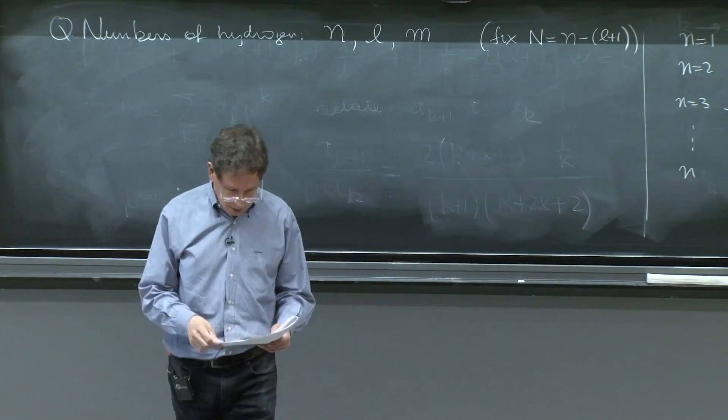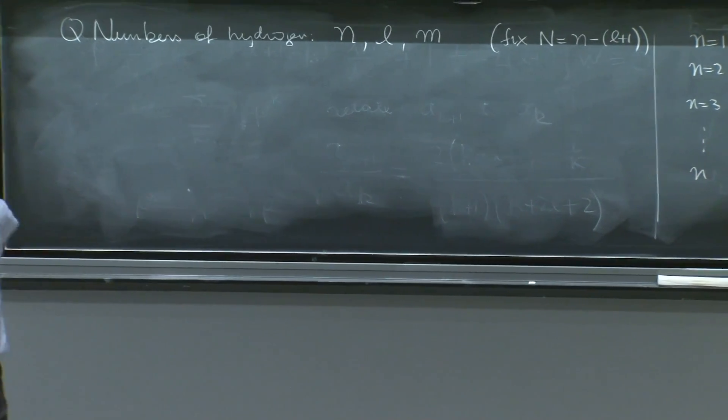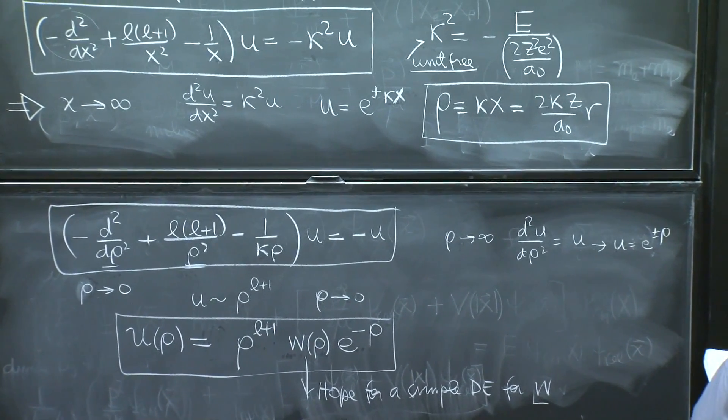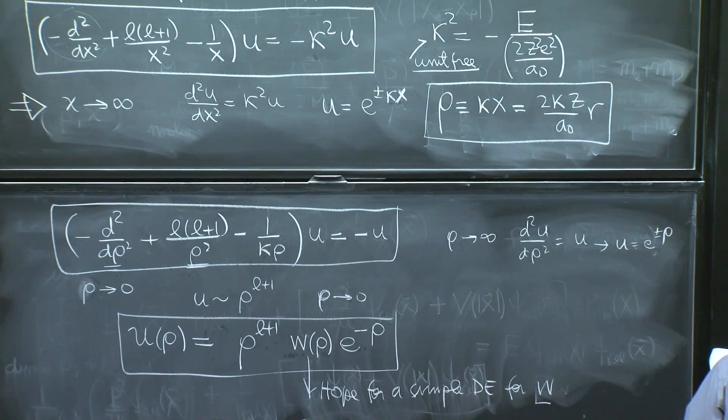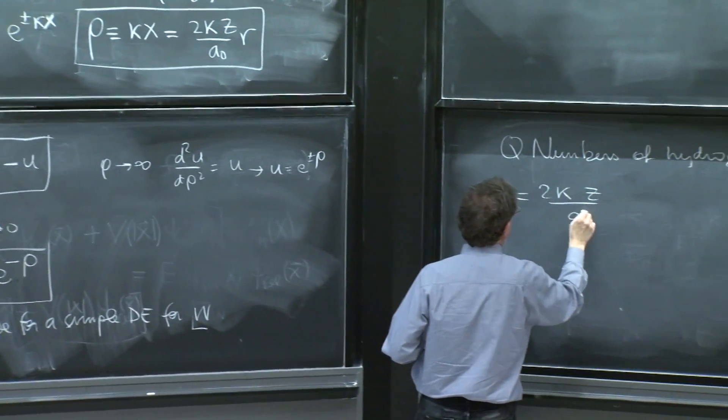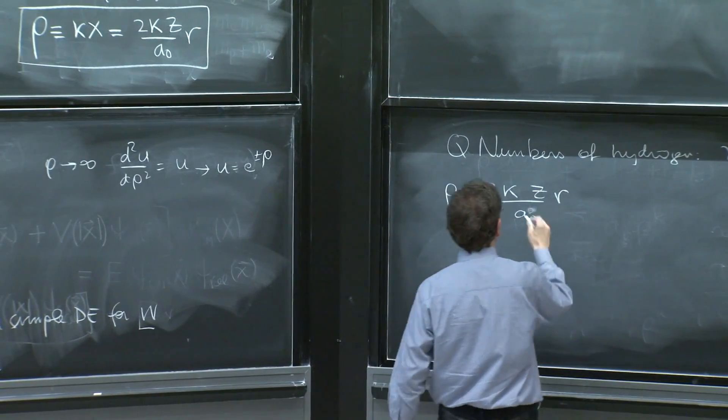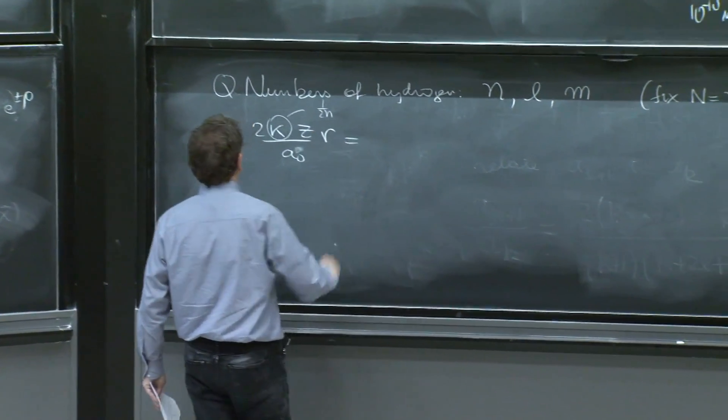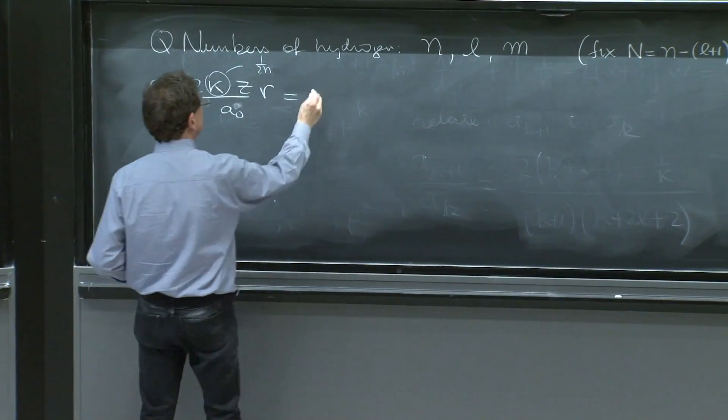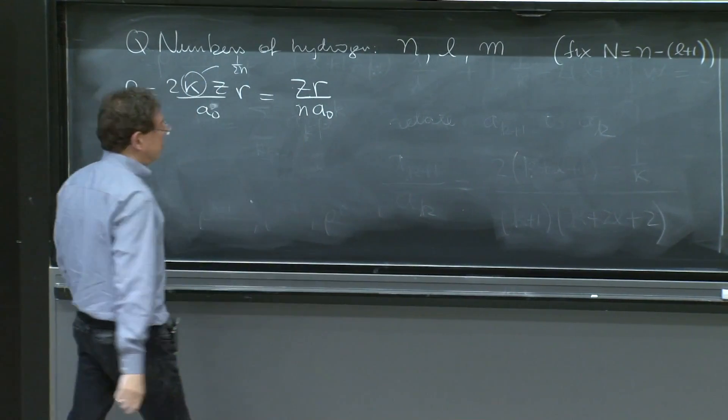And that's interesting information. So let's recall our variables. Rho is here. That's very nice. So rho is 2 kappa z over A0 r. But now we know what kappa is. Kappa is 1 over 2n. So actually, the rho variable is tailored to the quantum numbers. It's just zr over n A0, where n is the principal quantum number.